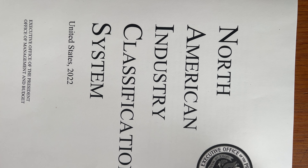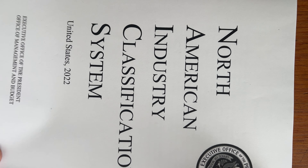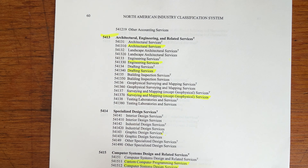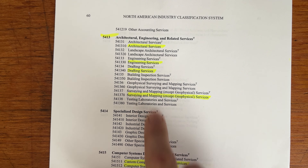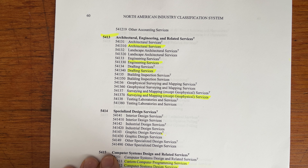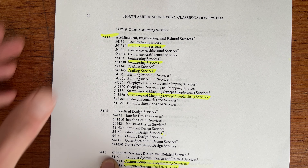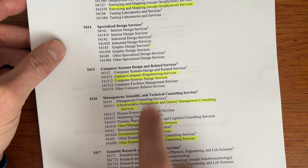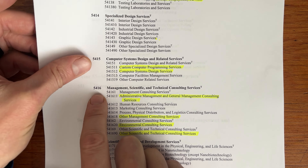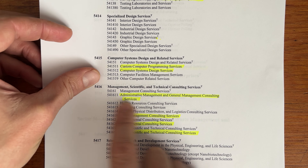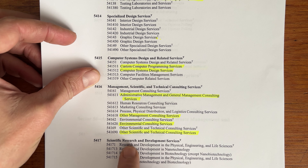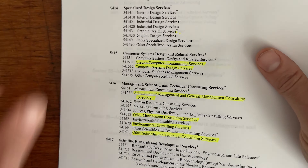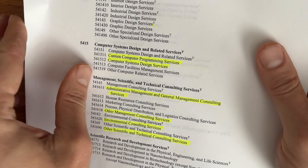The most common architectural and engineering services NAICS codes are in the 5413 group: architectural and engineering drafting, and surveying. A lot of companies will also list the 5415s, specifically custom computer programming and computer system design. Many will also add the 5416s: administrative management, other management, environmental consulting, and other scientific and technical consulting services — and they will also frequently